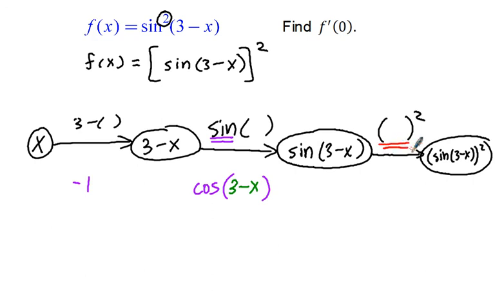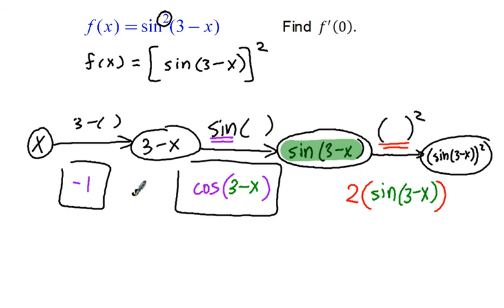And let's go to our final process. The rate of change of something squared is 2 times the input, and here's our input that needs to go into that. Sine of 3 minus x. And once again, the chain rule simply tells us that we can find the answer by multiplying each of these components together to form a product.